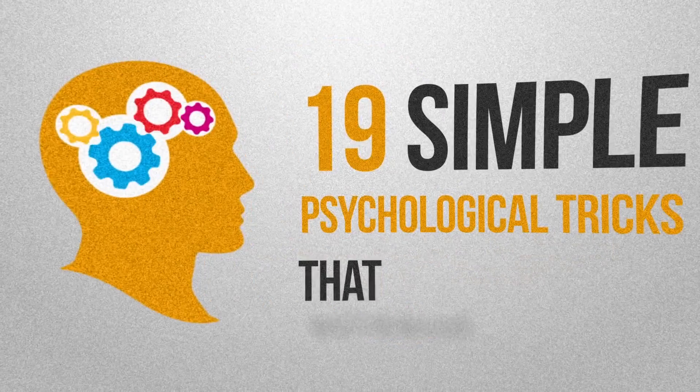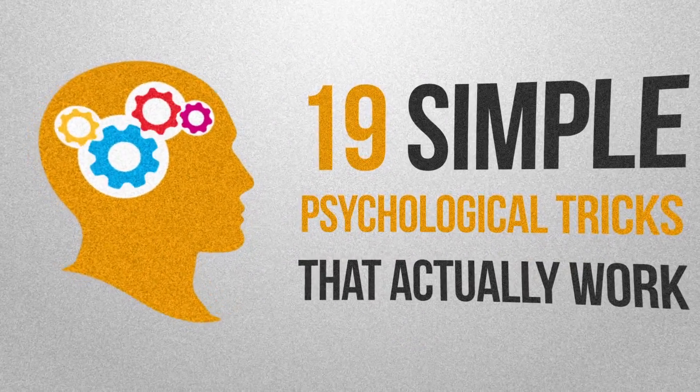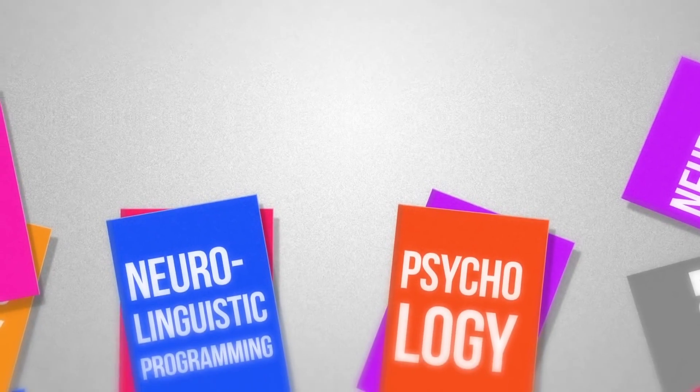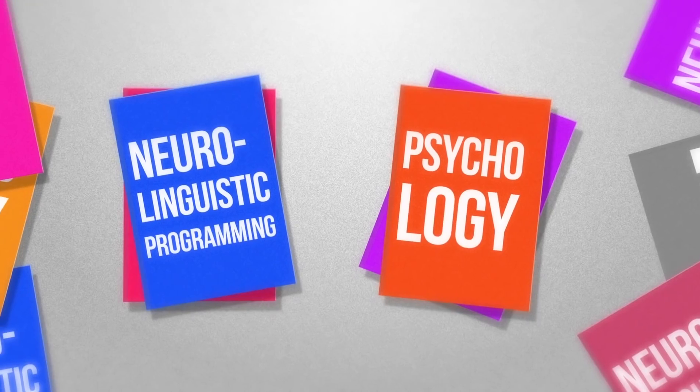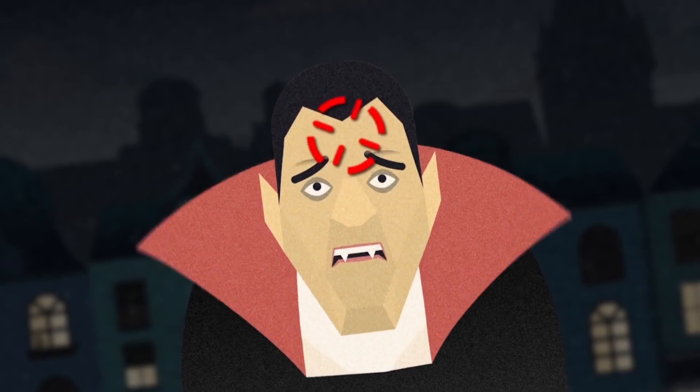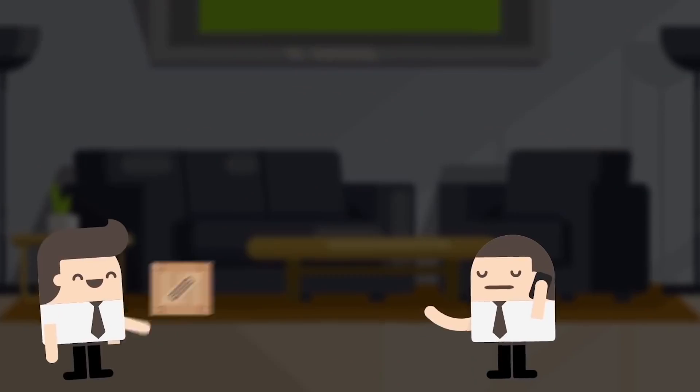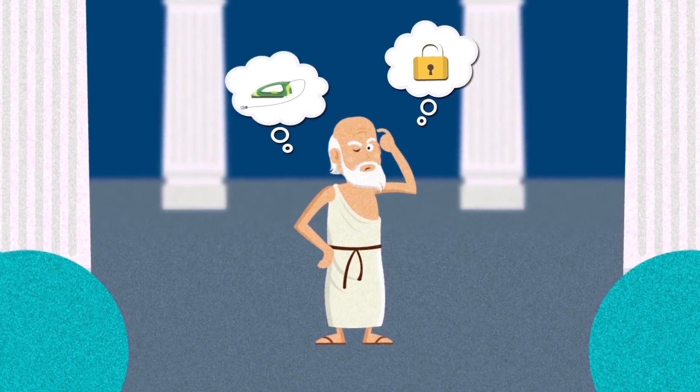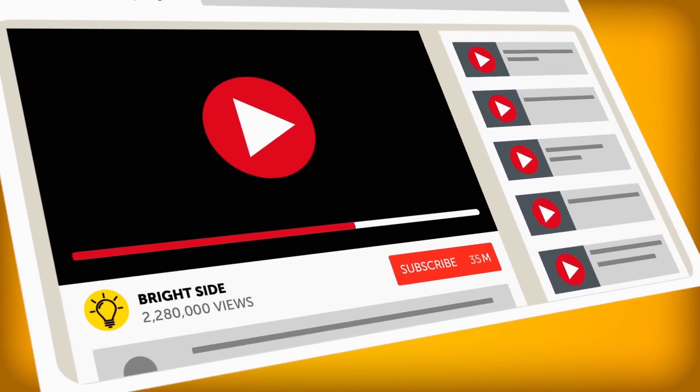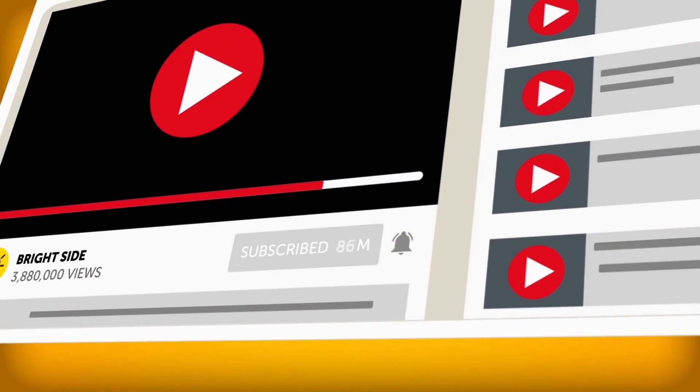19 Simple Psychological Tricks That Actually Work. There are all kinds of fancy books on neuro-linguistic programming and psychology that can help professionals get what they want from others, but there are also much simpler yet just as effective methods that anyone can use on a daily basis. Here are 19 of them. Be sure to subscribe and ring that notification bell to join us on the Bright Side of Life.